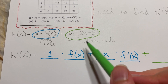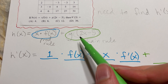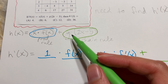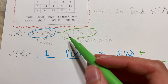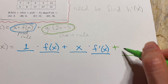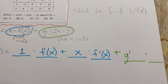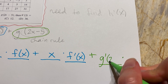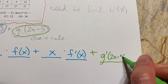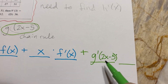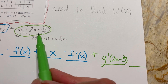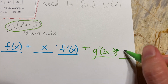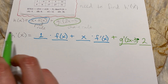Now we take the derivative of the green-circled part. Since it's a nested function, we use the chain rule: take the derivative of the outside function g, and since we don't know any details about g, we write g' and plug in the original inside part — so that's g'(2x - 5) — then multiply by the derivative of the inside, which is the derivative of 2x - 5, giving us times 2.